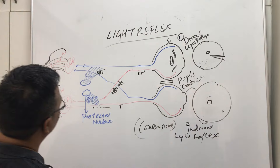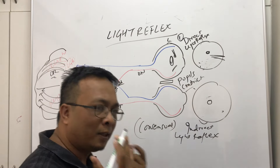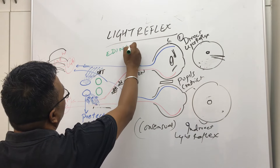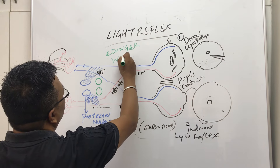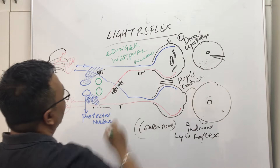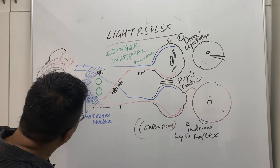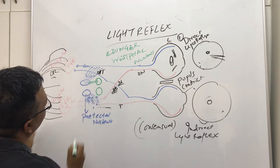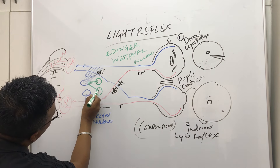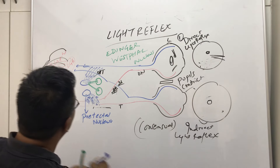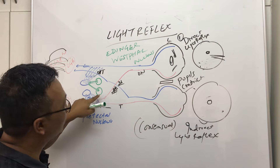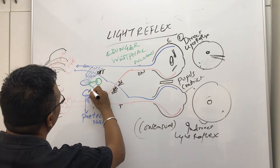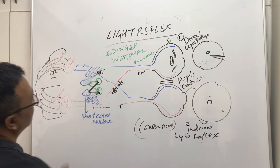In front of the pretectal nucleus there is another important nucleus called the Edinger-Westphal nucleus. From the pretectal nucleus of the midbrain, fibers go up to the Edinger-Westphal nucleus — and not only to the same side, they also go to the opposite side. Because of this bilateral projection to both Edinger-Westphal nuclei, there is an indirect light reflex in the contralateral eye.